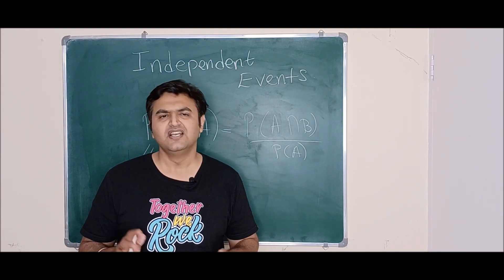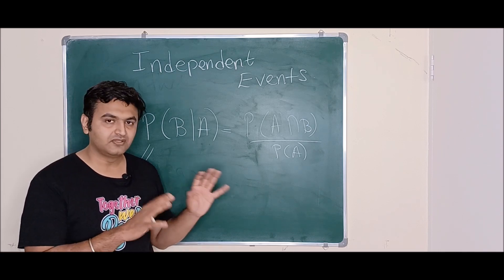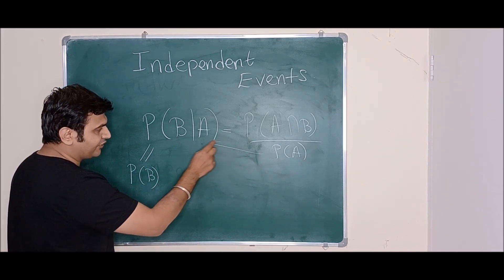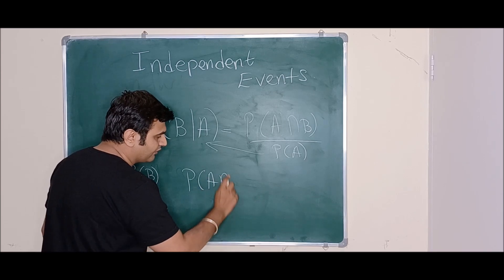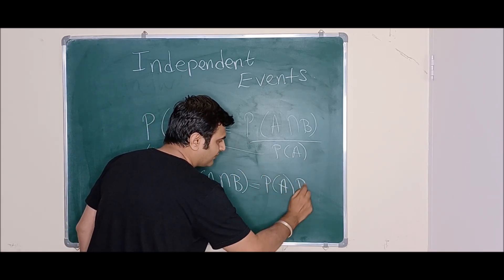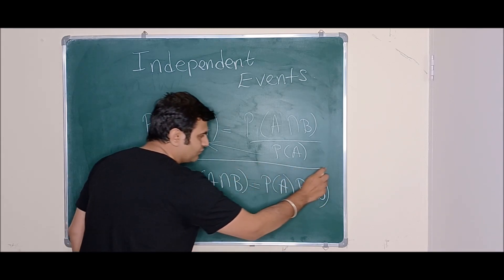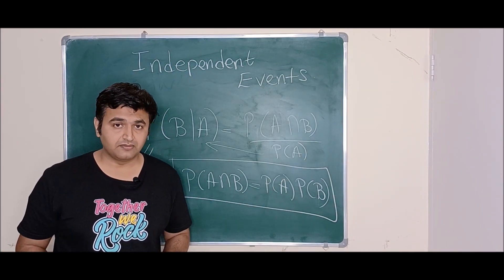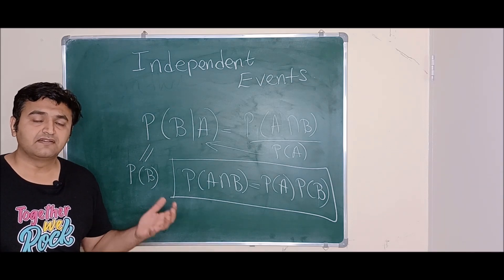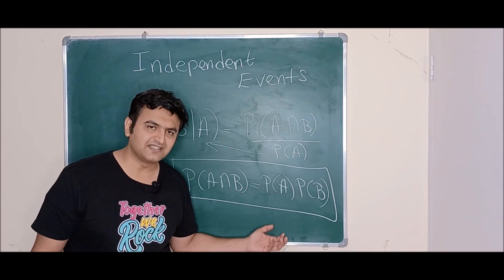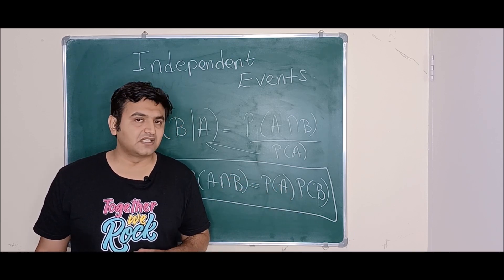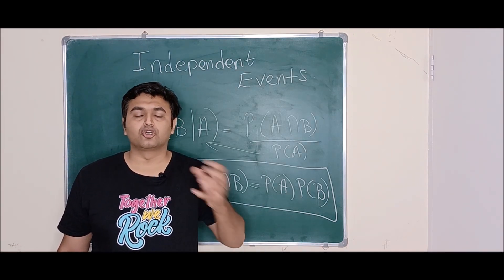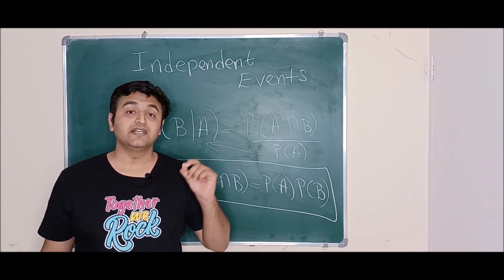Students often get confused between these two, so I want to stress that point. Another definition: if you bring probability of A over, you get that the probability of A intersection B equals probability of A times probability of B. Some authors give this directly as a definition. But when asked when two events are independent, you should always say: if the probability of B does not depend on the occurrence of event A, then A and B are independent events.